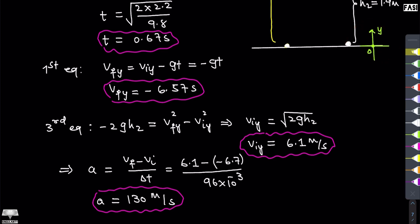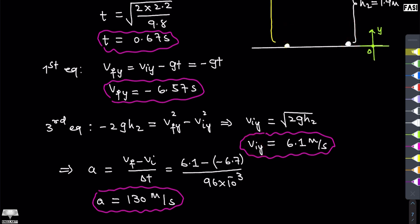One important clarification about nomenclature: the labels VfY and ViY used earlier were just names for intermediate calculations. The key concept is identifying which velocity is the true final velocity and which is the true initial velocity for the contact phase. The velocity with which the ball leaves the ground is Vf (equals 6.1 m/s, upward), and the velocity with which it arrives at the ground is Vi (equals minus 6.57 m/s, downward). The nomenclature differs, but the concept is what matters.